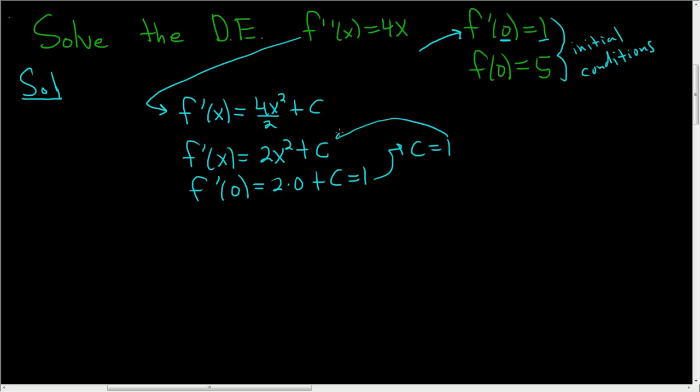Now you plug the c back in. So f prime of x is 2x squared plus 1. Again, first thing you do, integrate one time, you get the first derivative. So you get this, then you use this condition, you replace x with 0 and set it equal to 1 to find c. So c was 1. Now we do it again.